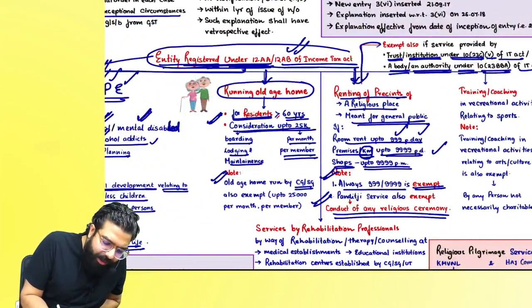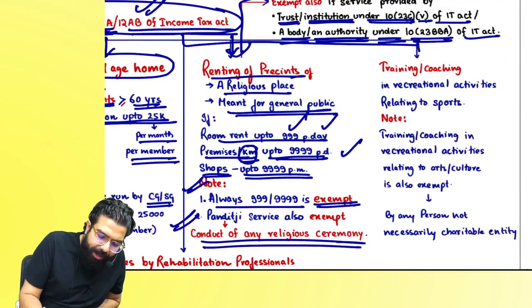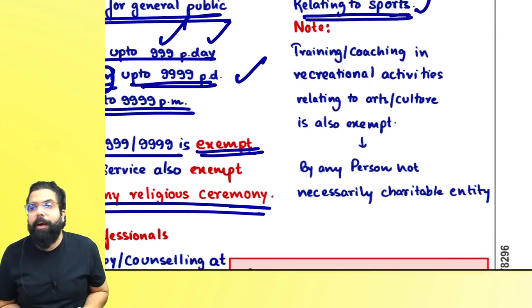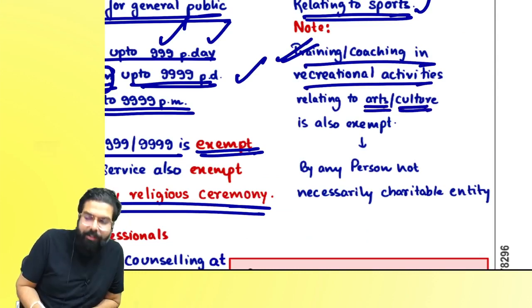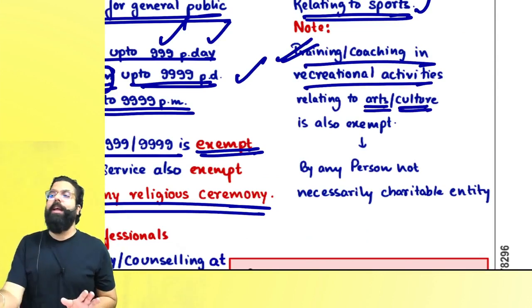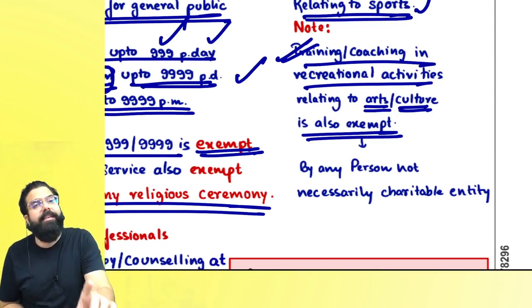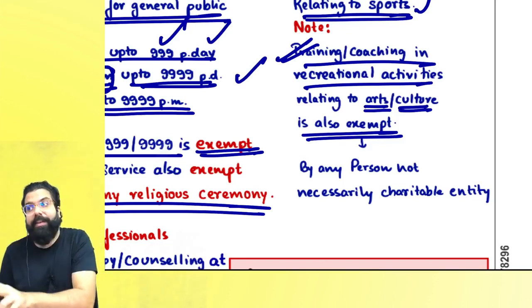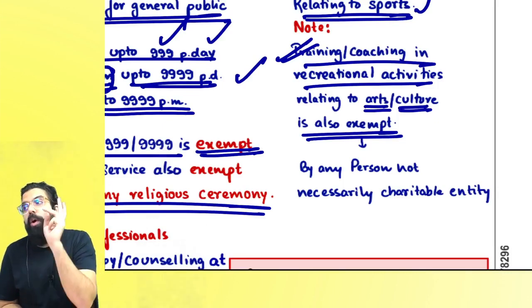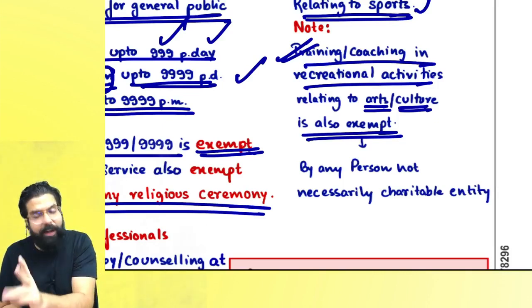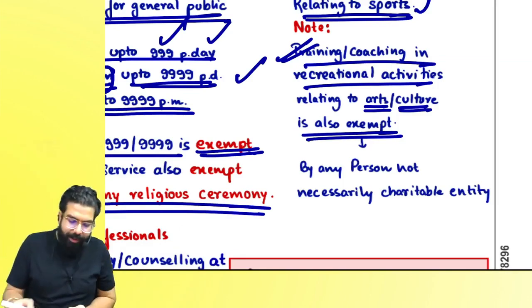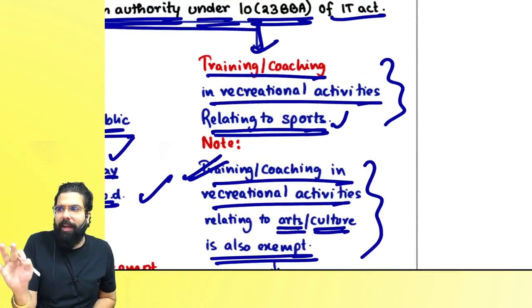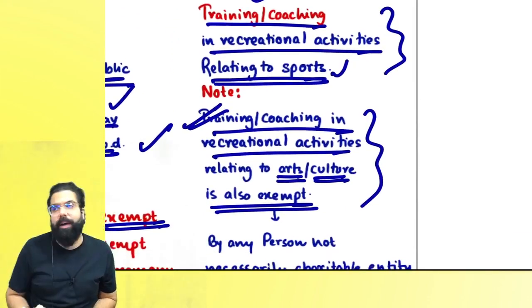If an entity registered under 12AA or AB of the Income Tax Act is providing training or coaching in recreational activity relating to sports, there will be an exemption. Also, if there is training or coaching in recreational activity relating to art or culture given by an entity registered under 12AA or by any other person, then it will also be exempted. However, for recreational activity relating to sports, only an entity registered under 12AA or AB is exempted — not any other person. For art and culture, by anyone it is exempt.